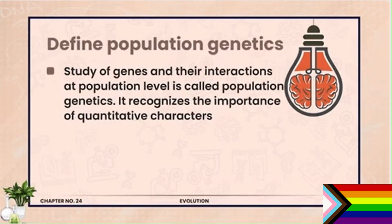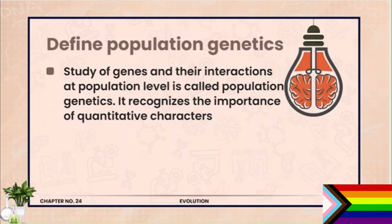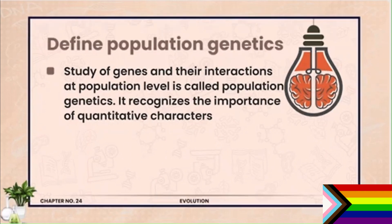Question number 3: Define population genetics. The study of genes and their interactions at the population level is called population genetics. It recognizes the importance of quantitative characteristics. Jab hum population ke apas mein variations, interactions ko discuss karte hain at population level, that is known as population genetics — genetics ko population level par discuss karna hai.